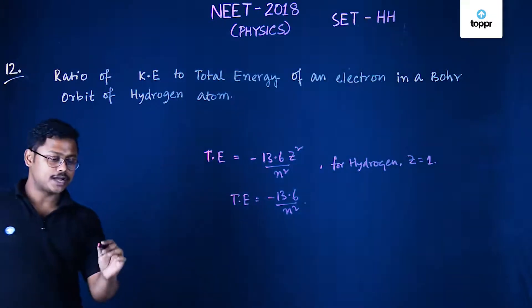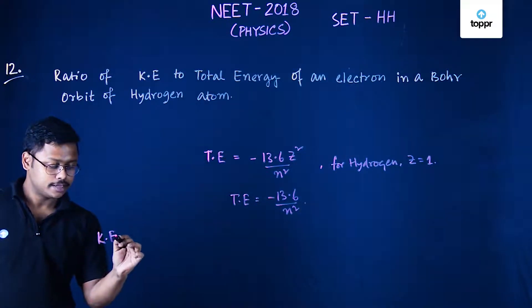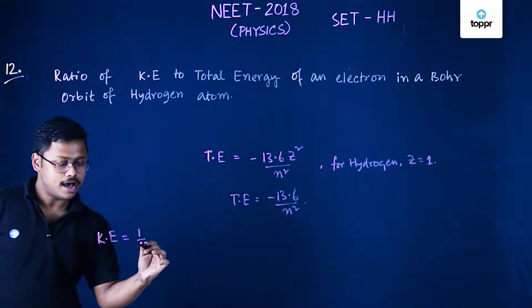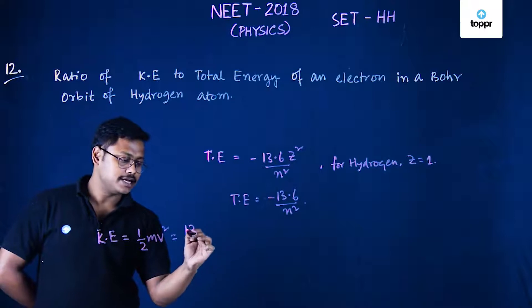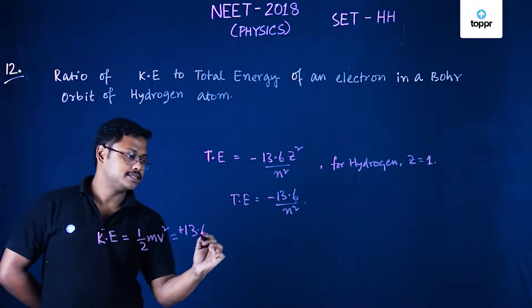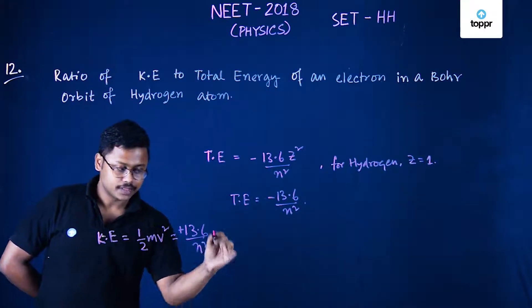Now what about kinetic energy? Kinetic energy equals half of mv square and that also can be written as plus 13.6 divided by n square.